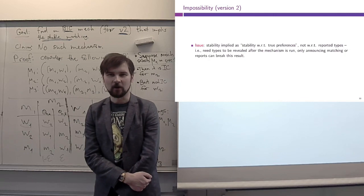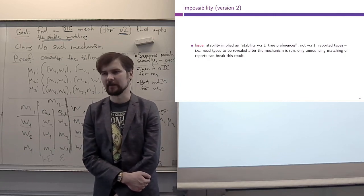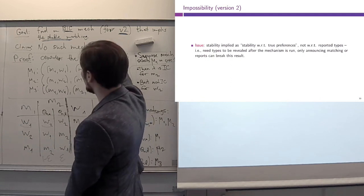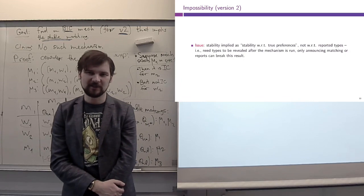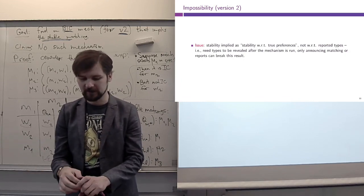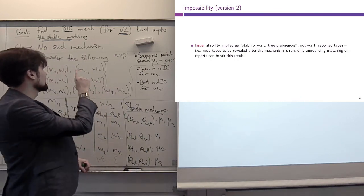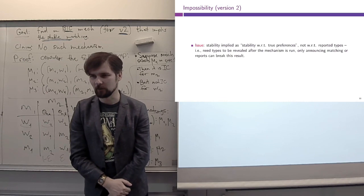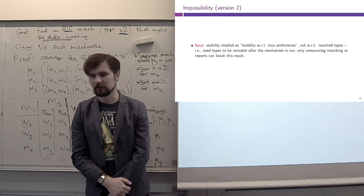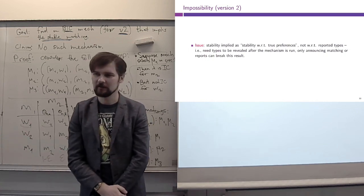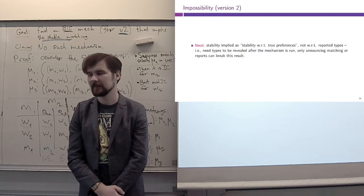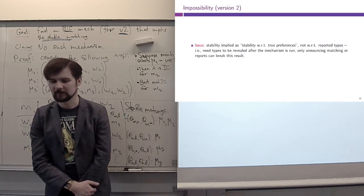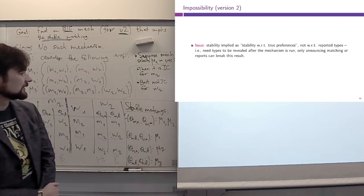Bayesian incentive compatibility is already the relaxed version of dominant strategy IC, so we don't want to relax that further — it's the minimum we want. The Version 2 model is the standard mechanism design framework, and we want to maintain that. So let's take a philosophical look at the concept of stability and ask: is this something we actually want? It made sense in Version 0 where everybody knew everything, and could be thought of as an equilibrium concept. But is it still appropriate here?